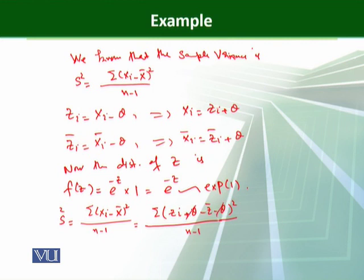So θ will cancel out and we have Σ(zi - z̄)² / (n-1), and you can see that it does not contain θ.